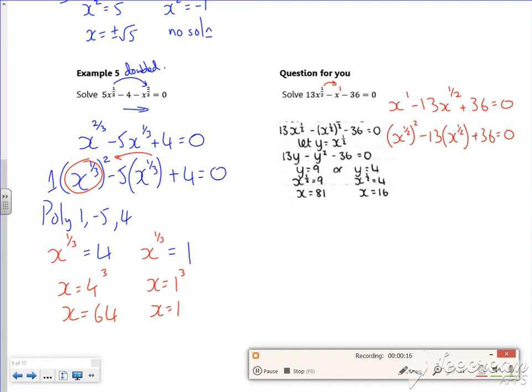So the power is doubled, the power there is doubled, it's 1 power 1 of a half, and it's doubled there. So then I can put in poly, my 1, my minus 13, and my 36. That'll get me the 9 and the 4 out.